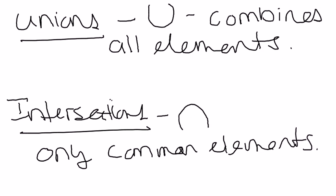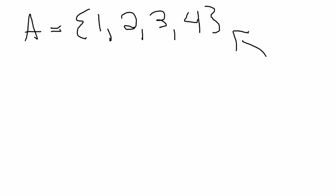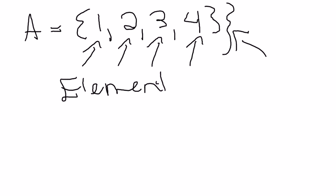So let's look at some visual examples now that we've talked about the vocabulary. For example, an example of a set would be A equals 1, 2, 3, and 4. So this entire thing here is the set. The individual numbers inside of the set are the actual elements.